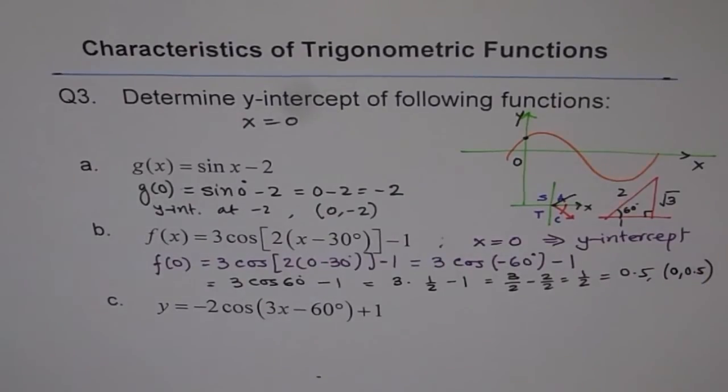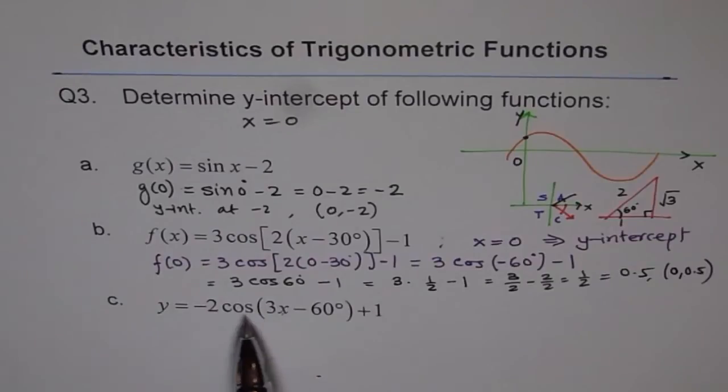Part C, I'll leave that for you to do. So you need to do what? Plug in 0 here. And you get a similar cos of minus 60 as we did, right?